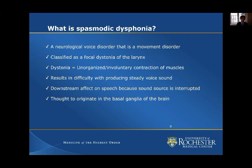Another example of a focal dystonia would be embouchure dystonia, which trumpet players and woodwind players can have with their lips. With spasmodic dysphonia, muscle function is interrupted and you're unable to produce a steady voice sound, but you do have a downstream effect on speech and the articulators because the sound source is interrupted.